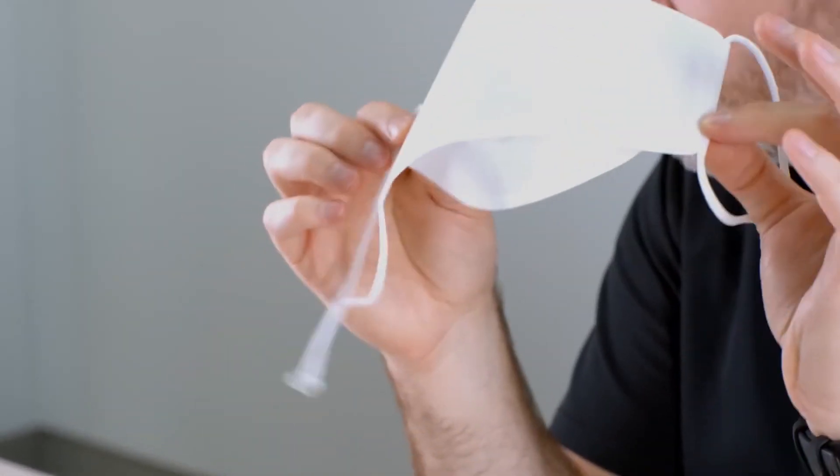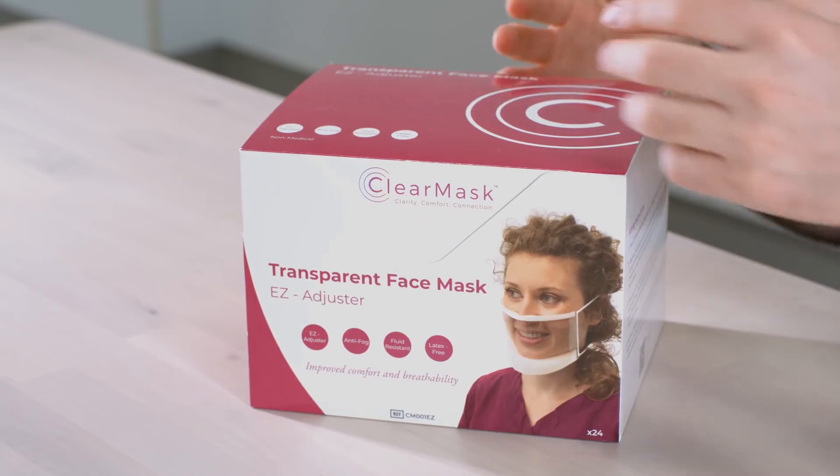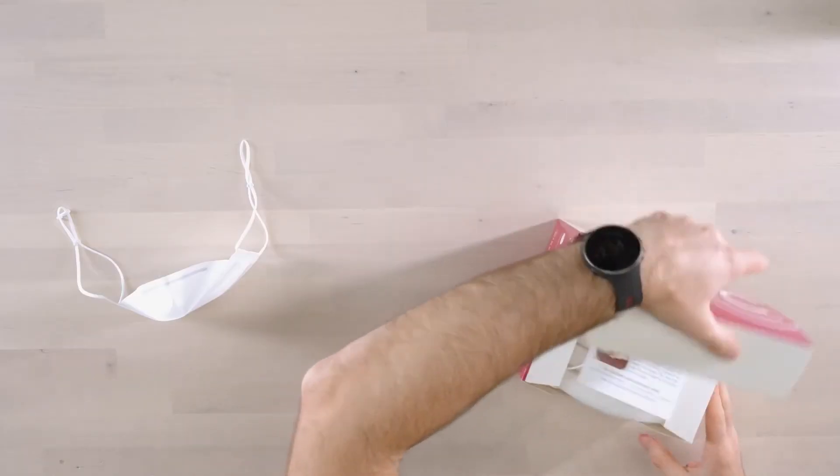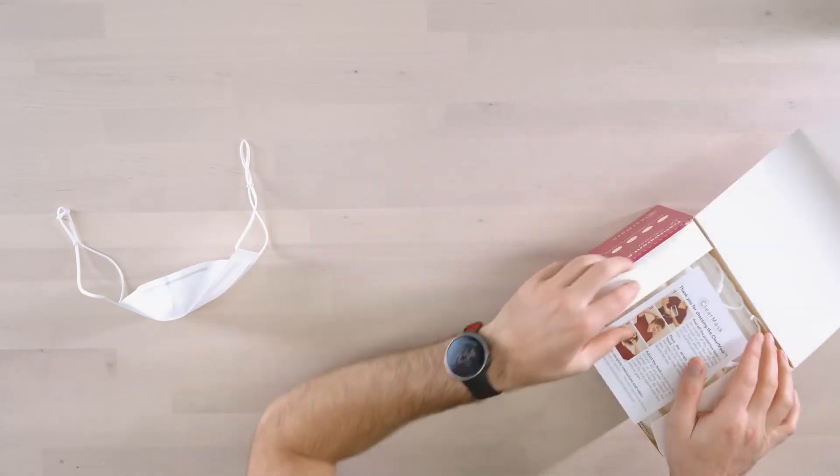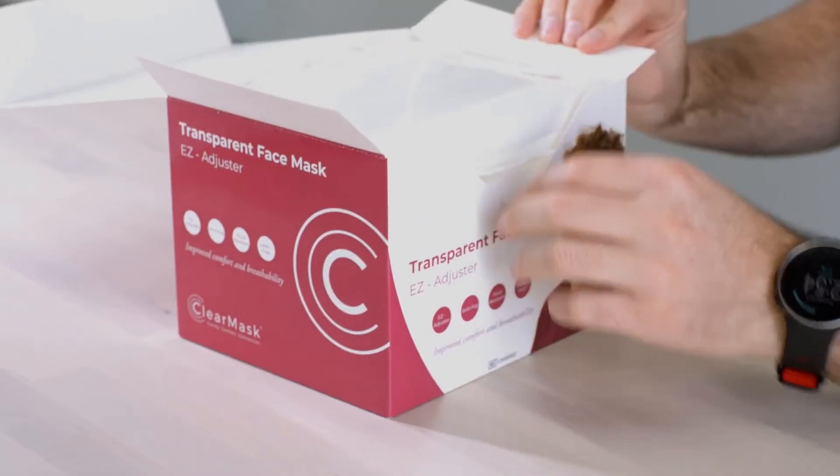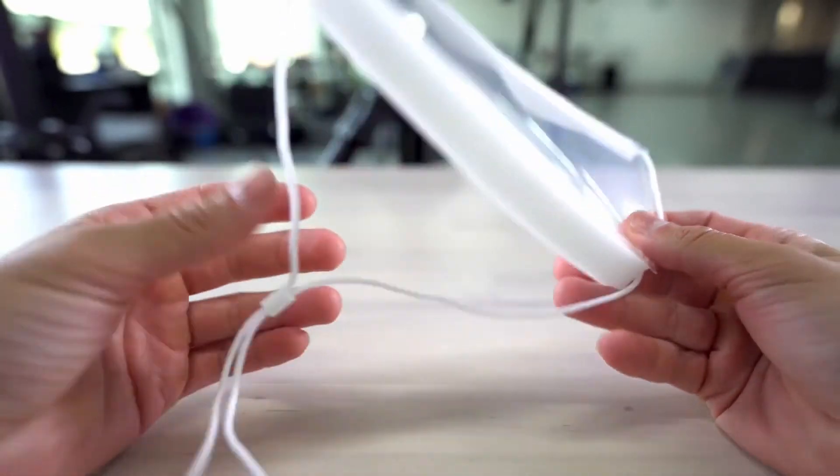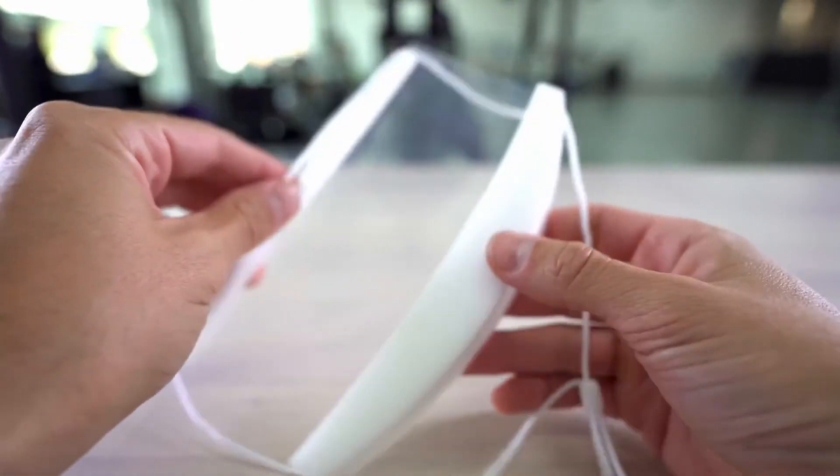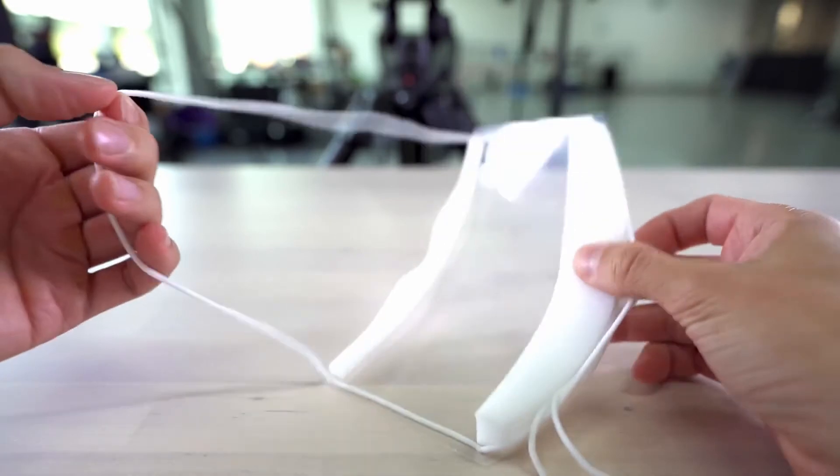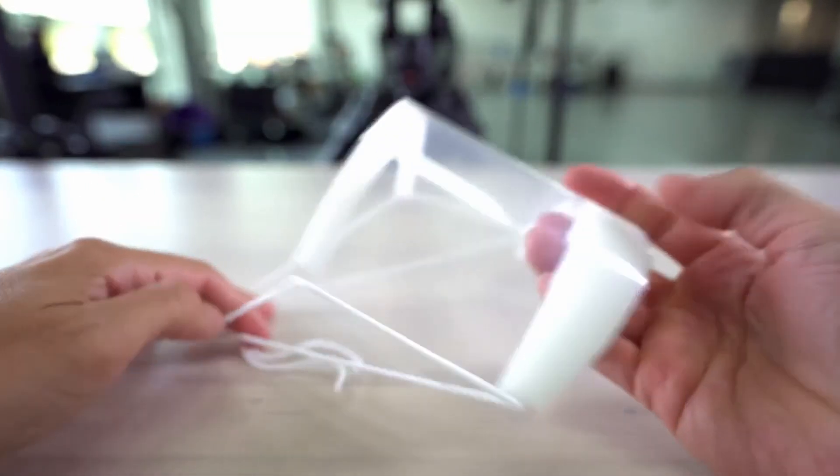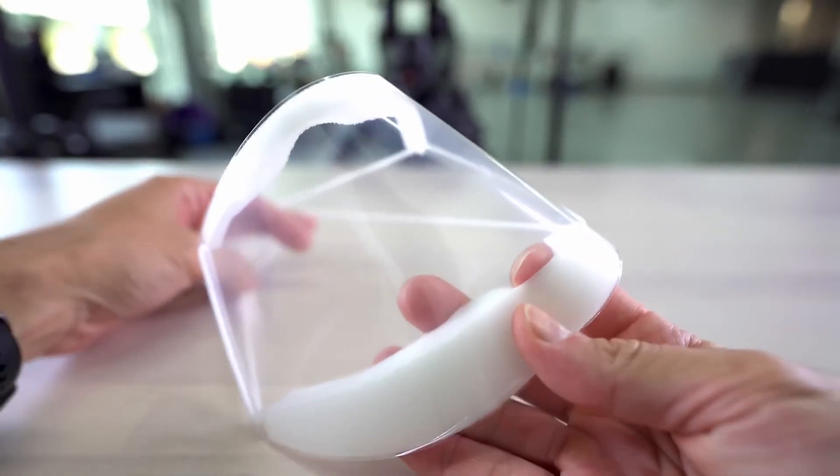Alright so the last piece we want to take a look at over here is the clear mask which is the other option for Apple employees. It's from the company directly supplying Apple. It's a totally different thing altogether. Apparently it's anti-fog, fluid resistant, improved comfort and breathability. Now this is a much different approach than the style that comes from over the head and wraps around. This one aims to actually seal a little bit under the chin there.